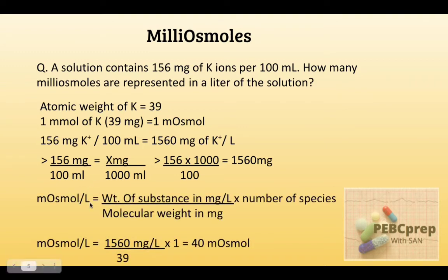Putting the values in the formula: 1560 mg per litre weight of substance, divided by 39 mg molecular weight, multiplied by 1 since there is only one ion. We do not multiply by 1000 because values are in milligrams. When we calculate, we get 40 milliosmoles.